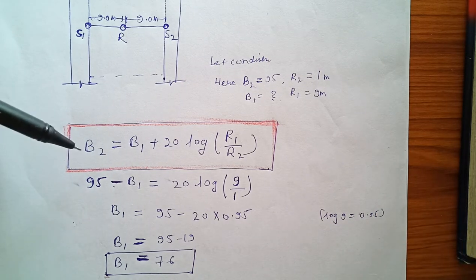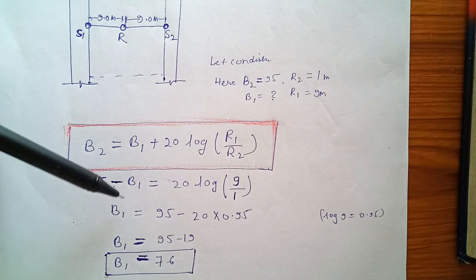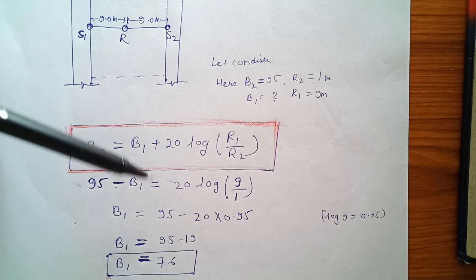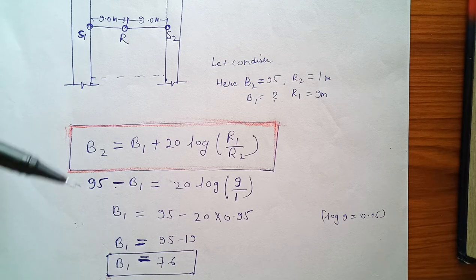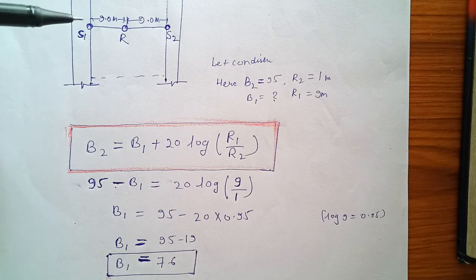So we assume 95 as L2 and we will find out L1 at the receiving point. Putting the values in the formula, we get L1 is equal to 76. In another video of acoustics intensity level and sound sources, we will discuss it in detail.